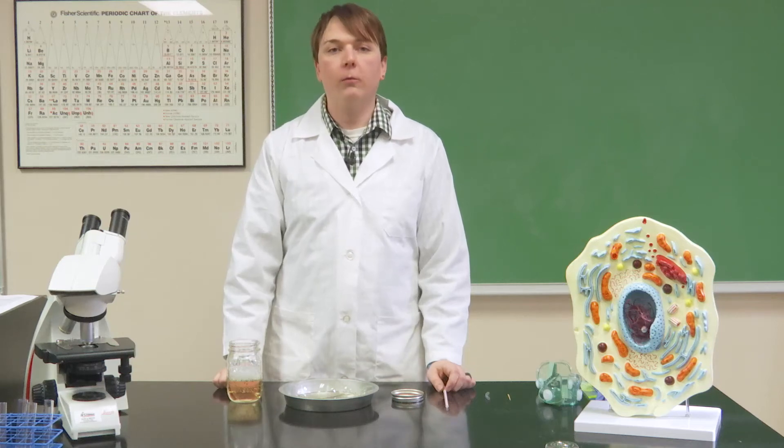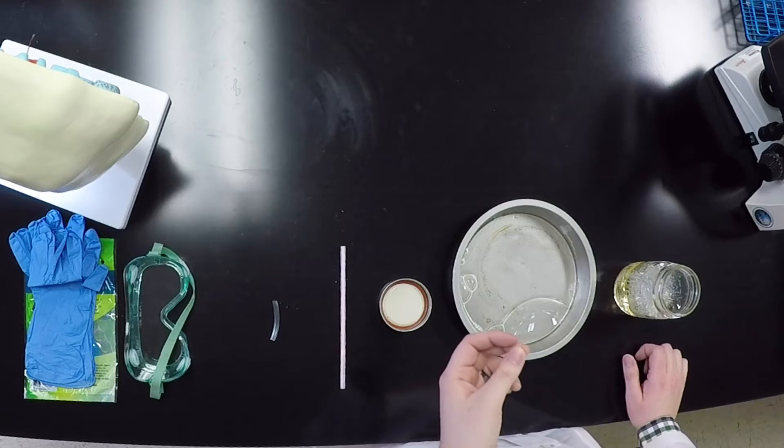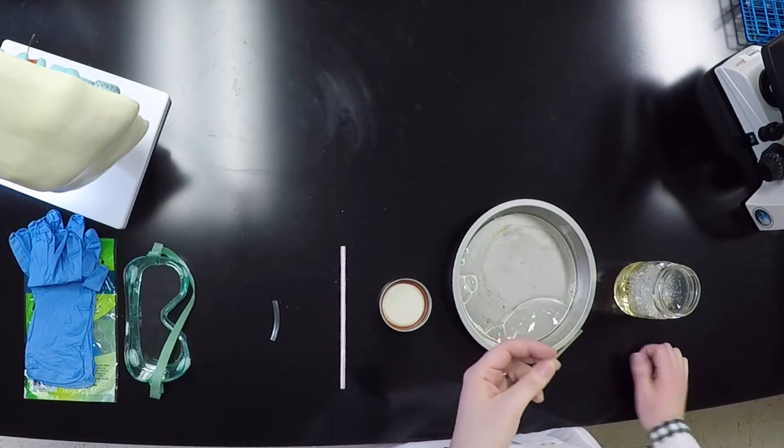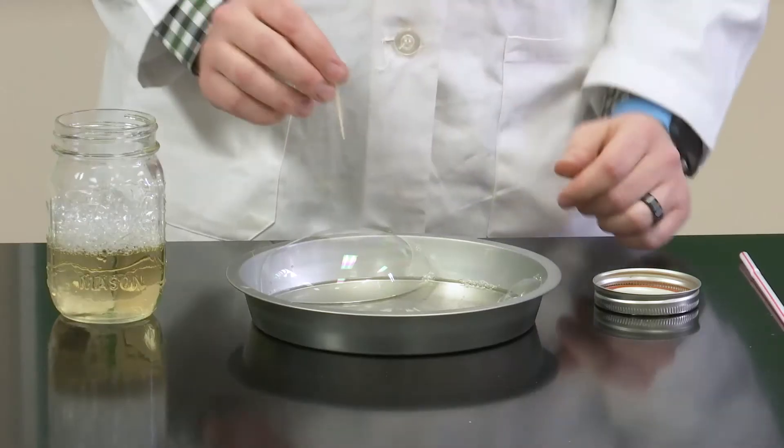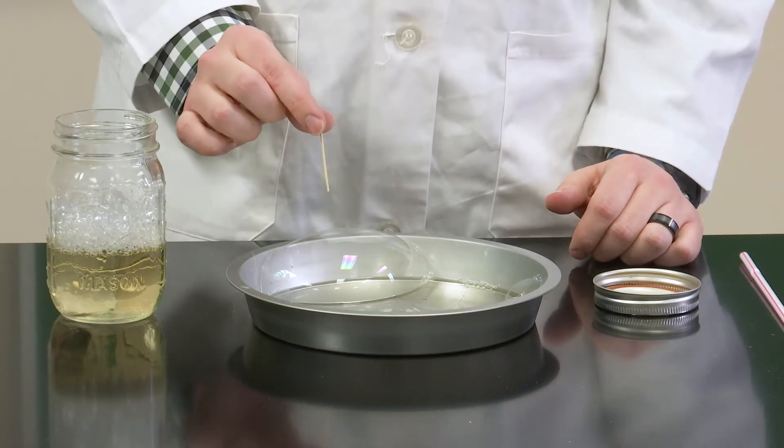This bubble represents our cell with a thin membrane acting as a cell membrane. Let's use this toothpick as a model for a molecule the cell needs, let's say glucose. When I drop it through the membrane you'll notice the membrane breaks.